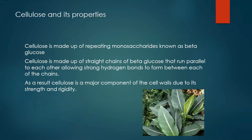Cellulose is slightly different to glycogen and starch. The main difference is that it is made up of beta glucose rather than alpha glucose. Cellulose consists of straight chains of beta glucose that run parallel to each other, allowing strong hydrogen bonds to form between each of the chains. This is strengthened further by microfibrils, which improve the strength of the hydrogen bonds. As a result, cellulose is a major component of cell walls due to its strength, helping to prevent cells from bursting as a result of osmotic pressure.